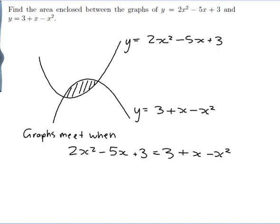So I just need to solve those equations. There's a 3 on both sides so they'll cancel. And we've got a 2x squared here and a minus x squared here.